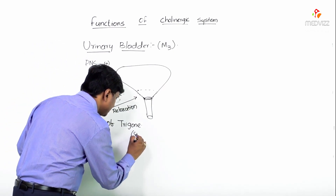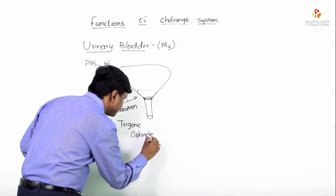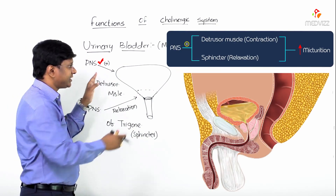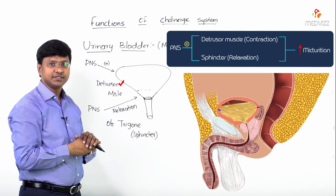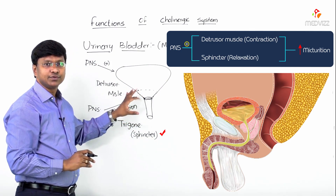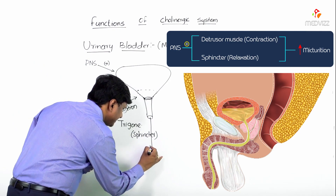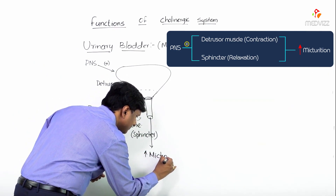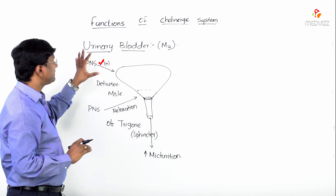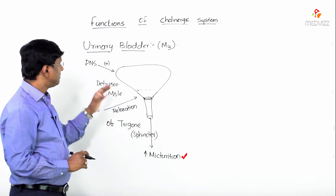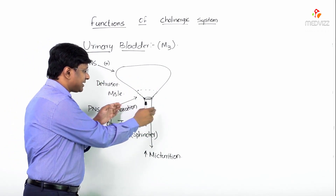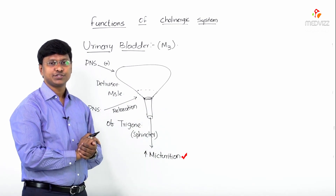The trigone contains the sphincter. So when the parasympathetic nervous system is stimulated, there is contraction of the detrusor muscle and relaxation of the sphincter present within the trigone. Thereby, there will be an increase in micturition. The effect of the parasympathetic nervous system is to increase micturition by stimulating the detrusor muscle and causing relaxation of the trigone.